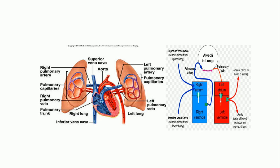Here is an illustration. This is the heart, this is the right lung, and this is the left lung. Blood from the left ventricle is pumped into the aorta and goes to the body tissues, where it is used for metabolic processes — delivering oxygen and nutrients. After being used, the blood returns to the heart: from the upper body via the superior vena cava, and from the lower body via the inferior vena cava, entering the right atrium.